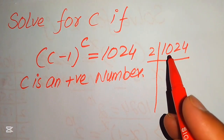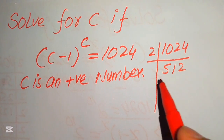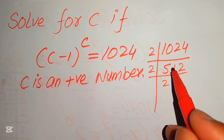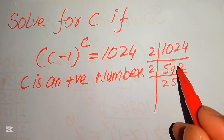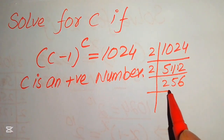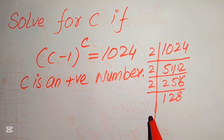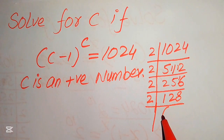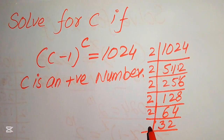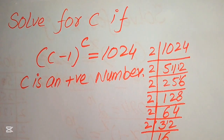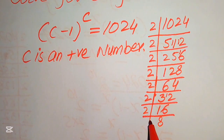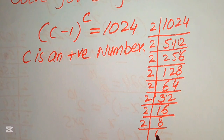So first we divide 1024 by 2 and continue dividing by 2 repeatedly. Each division step gives us a quotient, carrying remainders as needed through the long division process, until we have divided all the way down to 1.